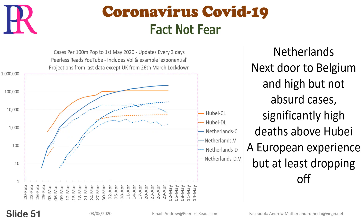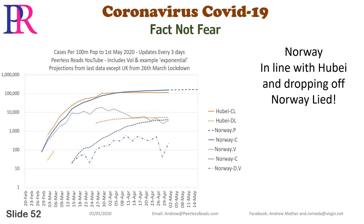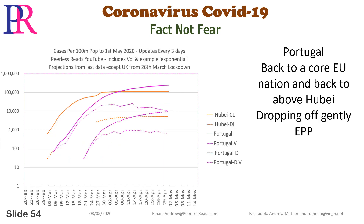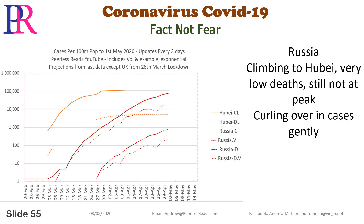Netherlands: next door to Belgium — high but not absurd cases, significantly high deaths above Hubei. Norway: a European experience but at least dropping off, in line with Hubei. Norway lied. Poland: not aligned with EU, way below Hubei — go figure. EPP at very low levels. Portugal: back to a core EU nation and back to above Hubei, dropping off gently EPP. Russia: climbing to Hubei, very low deaths, still not at peak, curling over in cases gently.